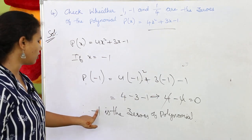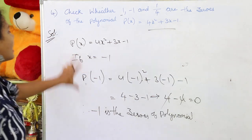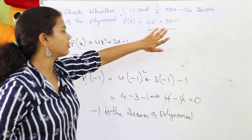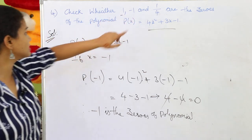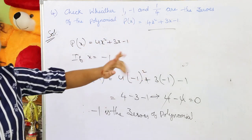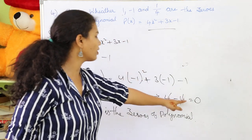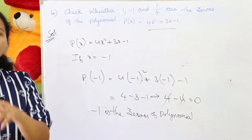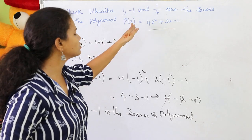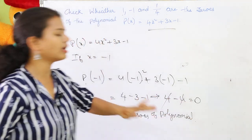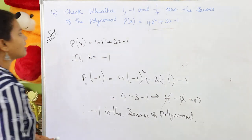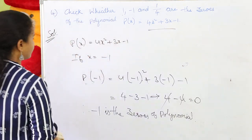Therefore, -1 is a zero of this polynomial for this given equation. Now let's go to the last one and check whether 1/4 is a zero of the polynomial or not.